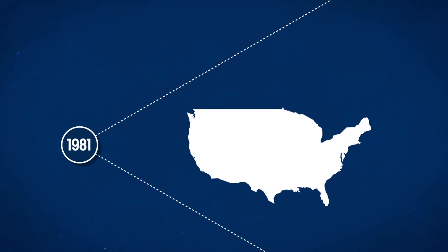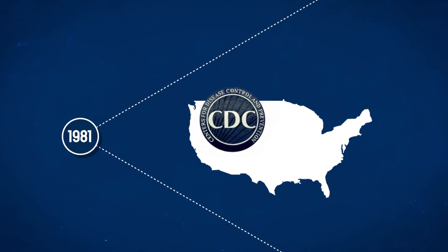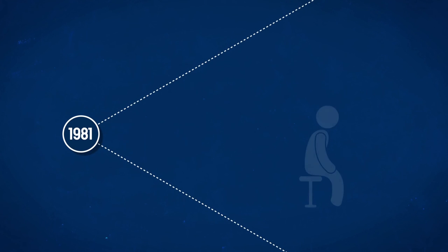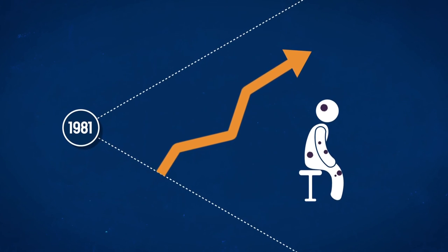In 1981, the renowned Centers for Disease Control and Prevention, or CDC, in Atlanta, observed an increase in cases of Kaposi's sarcoma, a rare form of cancer.